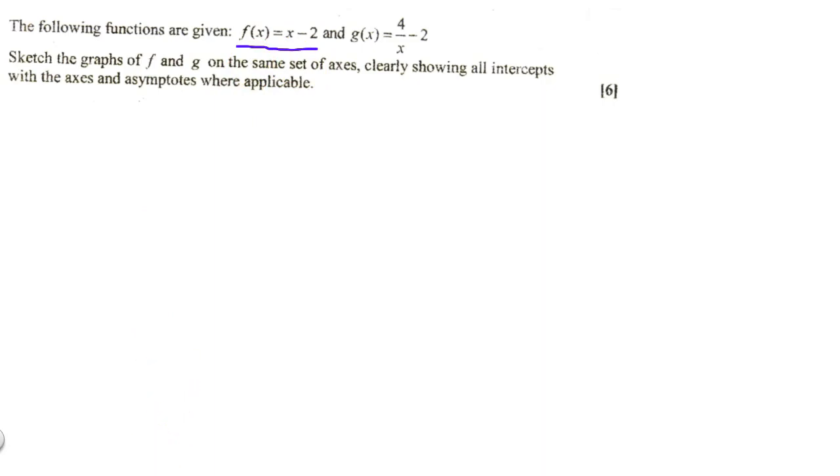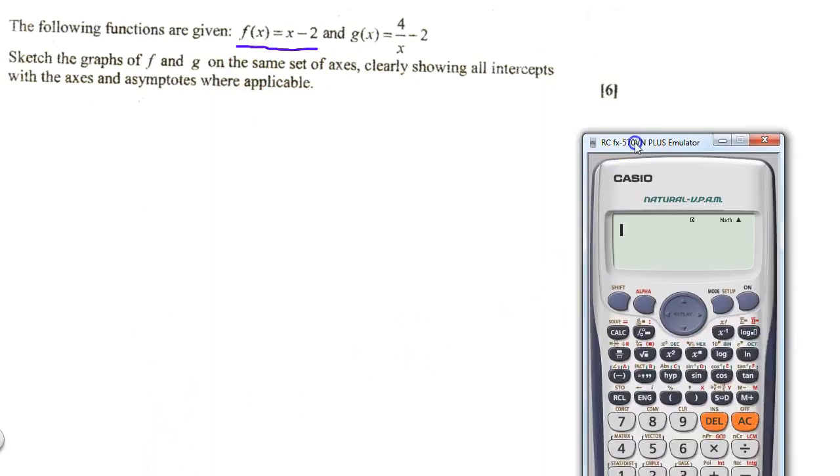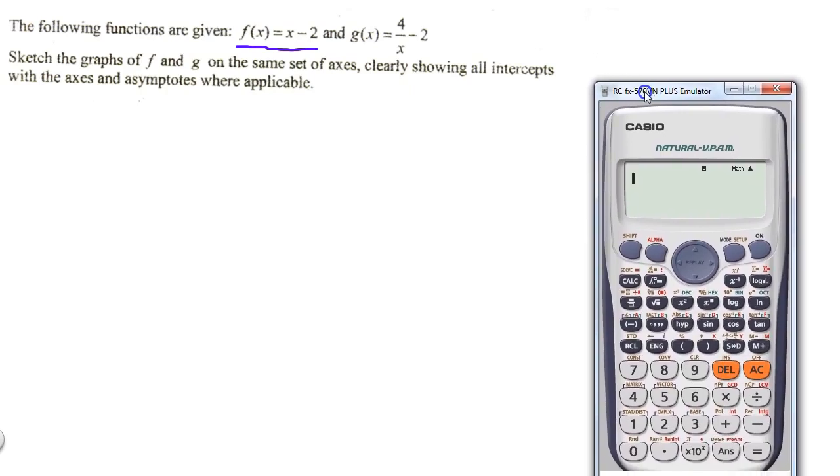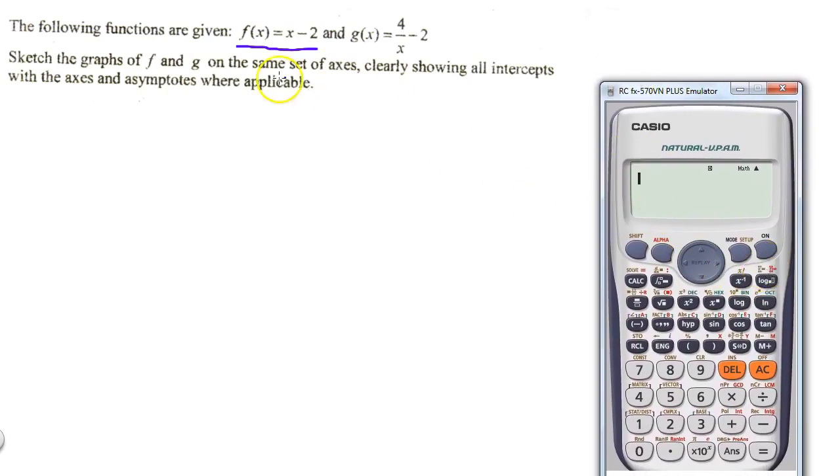In this particular example, we can use our calculator to sketch this graph. We'll press mode setup, go to option seven table mode, and equals to x minus 2. So it's alpha x minus 2. We say start at minus 5, end at 5, and the step will be 1.